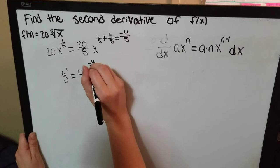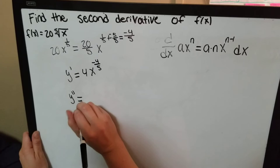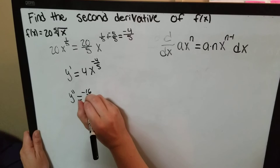Now, solving for y double prime, we multiply 4 times the power, which will give us negative 16 fifths x.